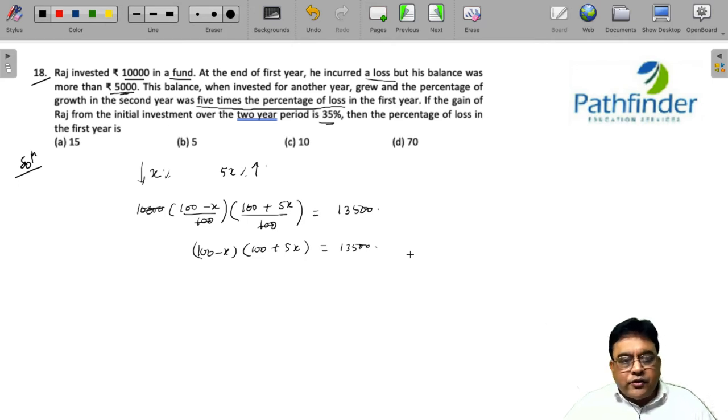You can either solve this as a quadratic equation, but if I were you I would put options and I can easily see that the only possible option that satisfies is probably 10. Does 70 also satisfy? 30 into, you know, if you put 70 instead of x you get 30 plus 450. Yes, 70 also satisfies.